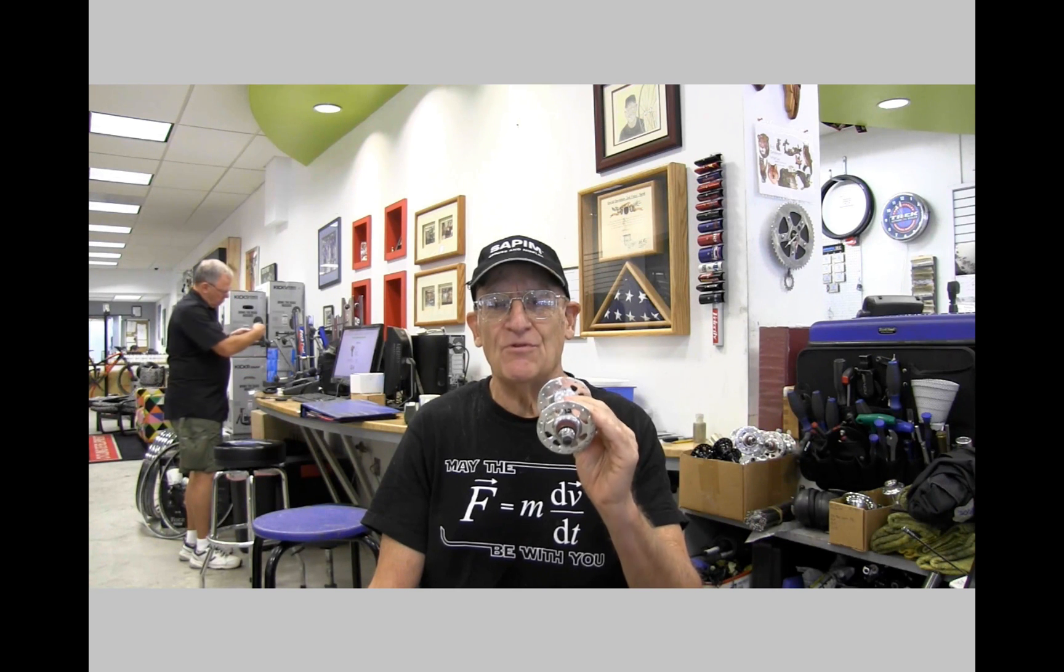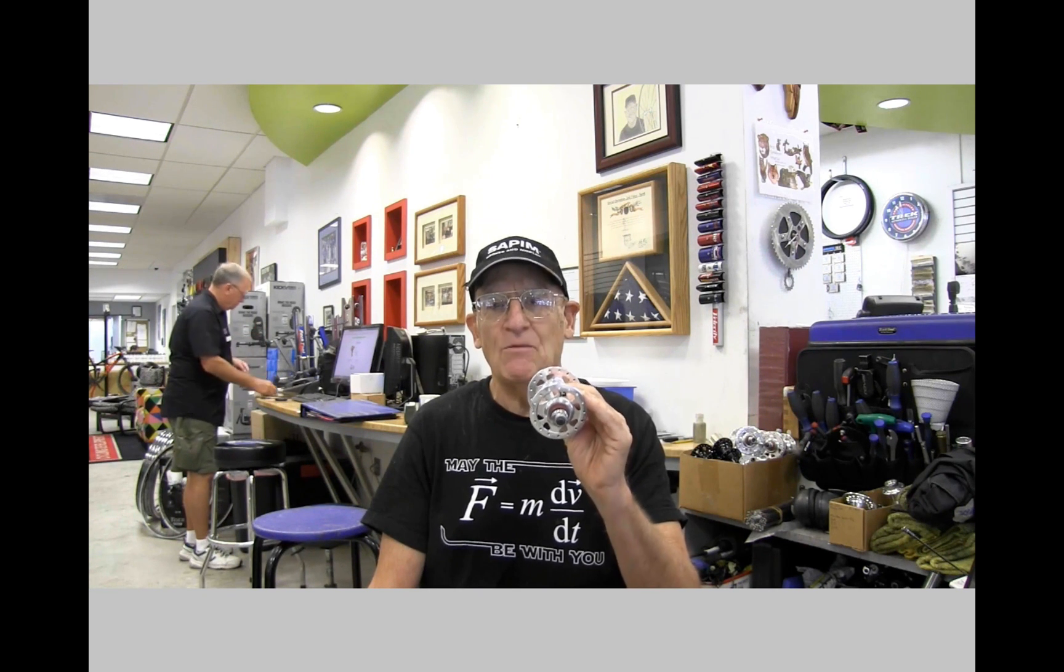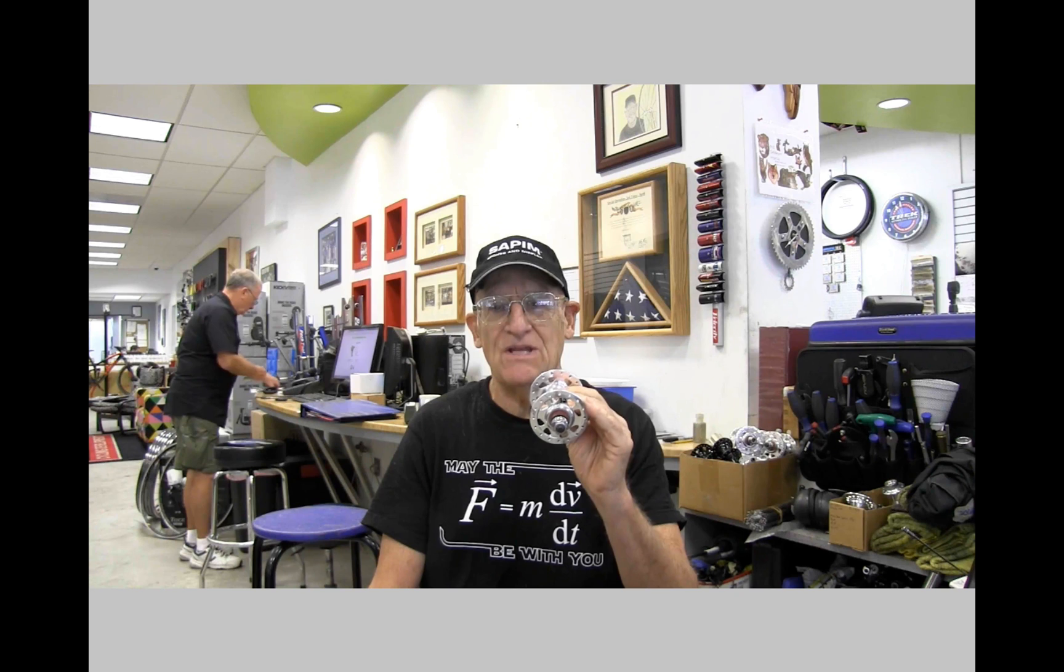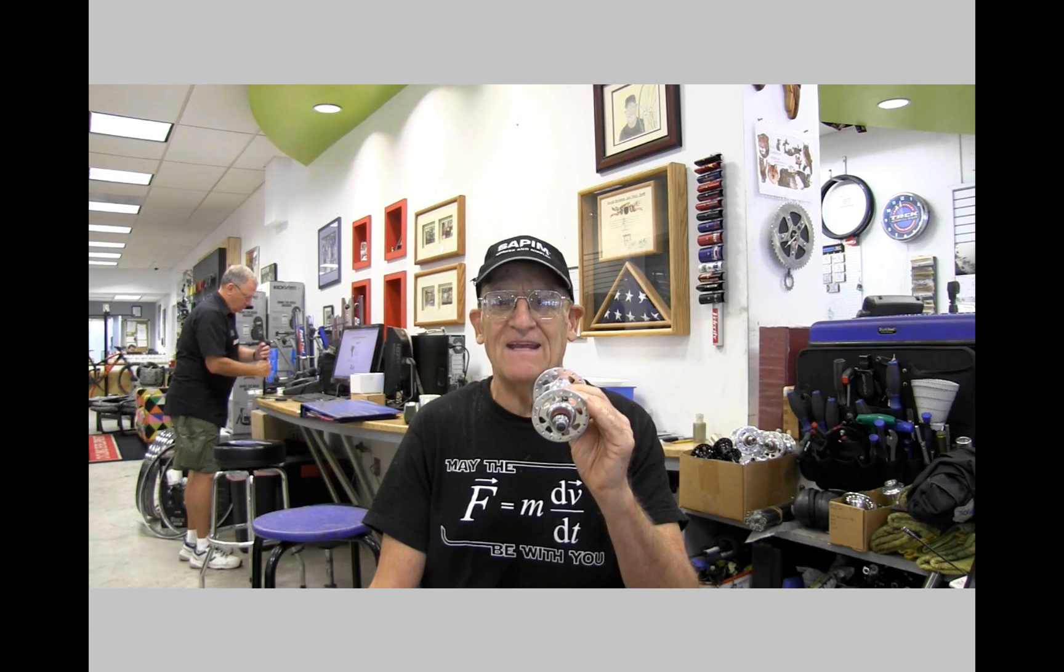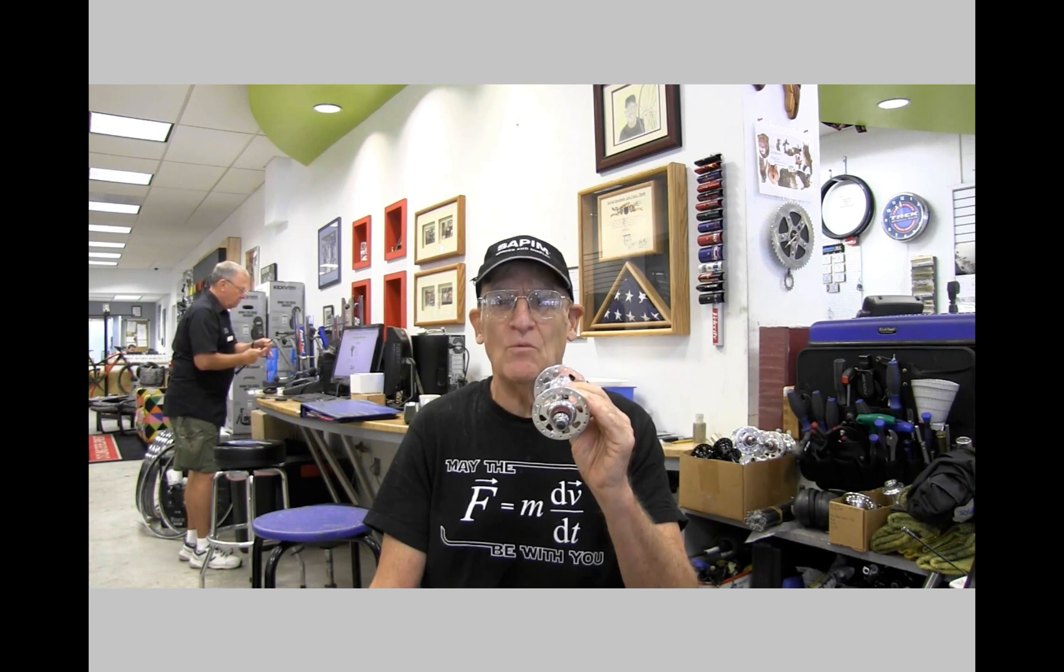I recently ran into an interesting situation. A guy brought in a 32 hole hub and wanted me to lace it up to a 16 hole rim, which seems easy enough. You think well I'll just use every other hole. It's not quite as easy as that and I figured out how to do it one way anyway and I'm going to share that with you.